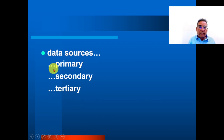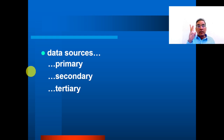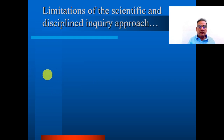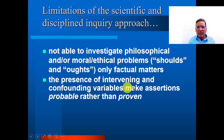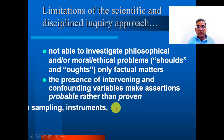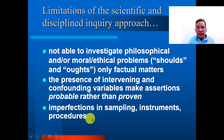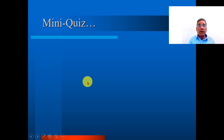Data sources: there are three data sources — primary, secondary, and tertiary. Limitations of scientific and disciplined inquiry: not able to address philosophical and moral-ethical study; the presence of intervening and confounding variables; and imperfections in sampling instruments and procedures — these are the limitations.